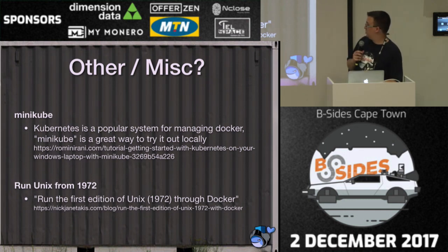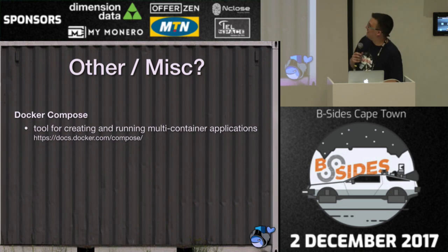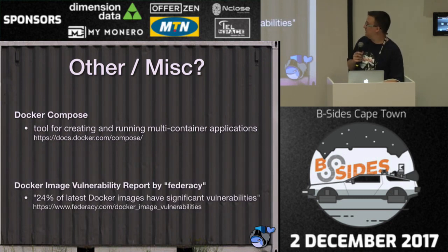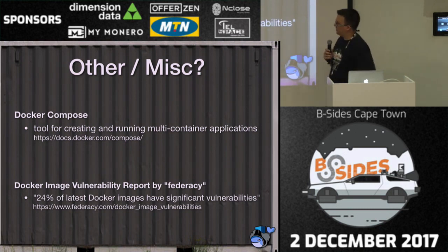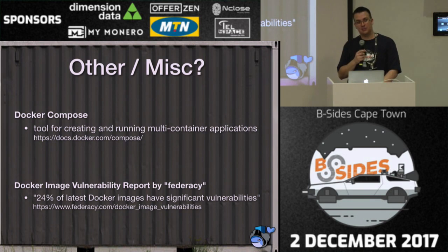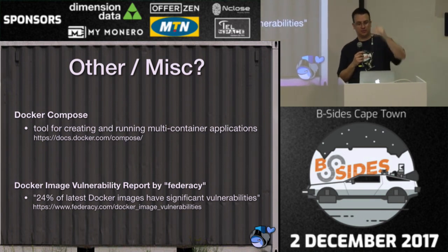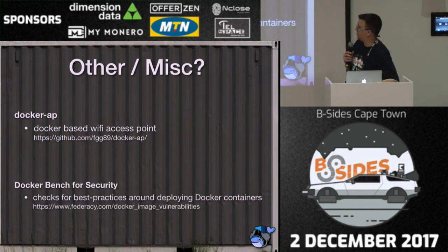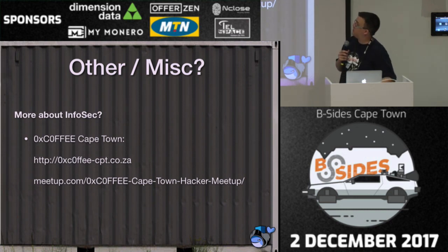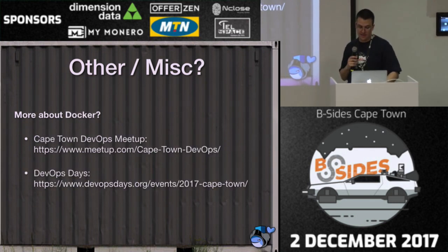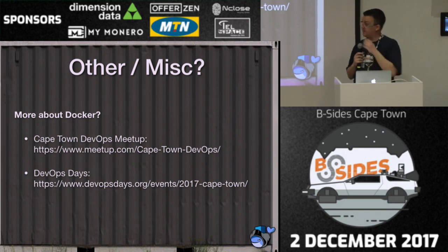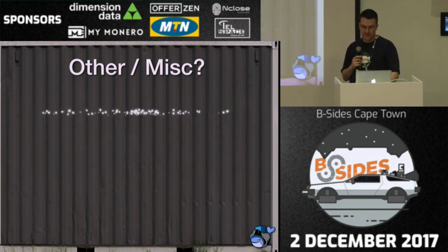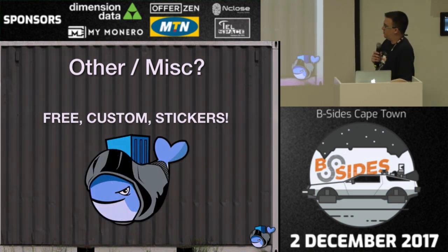You can mount your GPU inside a Docker container for mining or password cracking. There's a boot-to-root you can do inside Docker to learn more about it, and you can even run the very first Unix from 1972 inside Docker. Docker Compose lets you build really big complex networks very easily. You can also do access point and wireless stuff — mapping wireless into Docker is really cool. If you're interested in InfoSec, please come join us at 0xCoffee — we're on meetup.com and meet monthly. If you want to know more about Docker, talk to the DevOps guys — they've got a meetup and an annual conference.